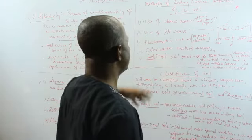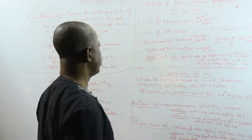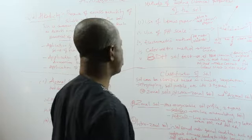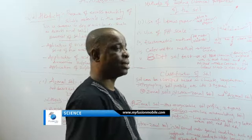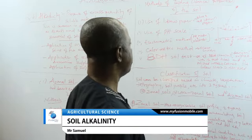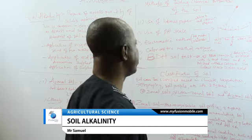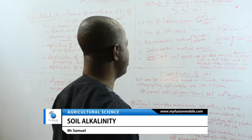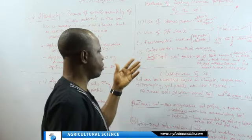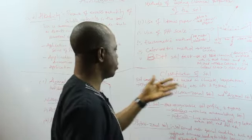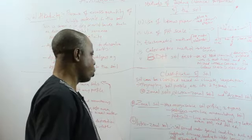And it also makes a pH color chart as well. So these are the methods by which the soil chemical properties could be tested. The first one is use of litmus paper. I told you red litmus paper is turned to blue by base. Then blue litmus paper to red by acid. Then if it is neutral, the litmus paper remains unchanged. Then use of pH scale, electrometric method, calorimetric method, and BDH soil test analysis.